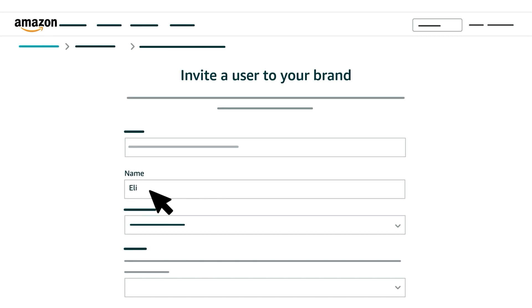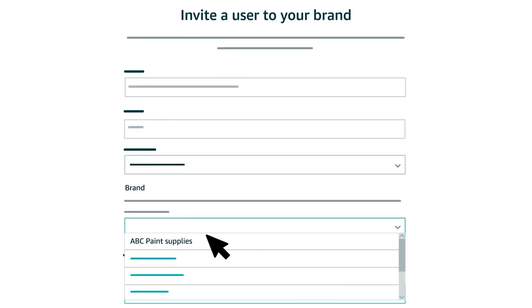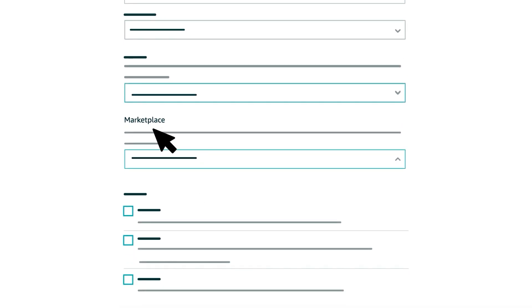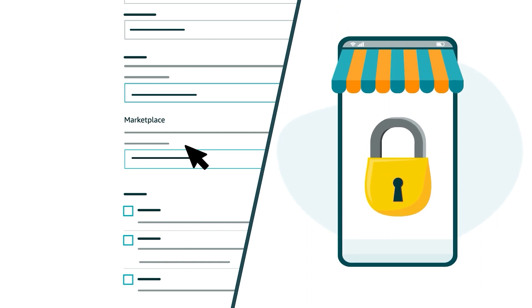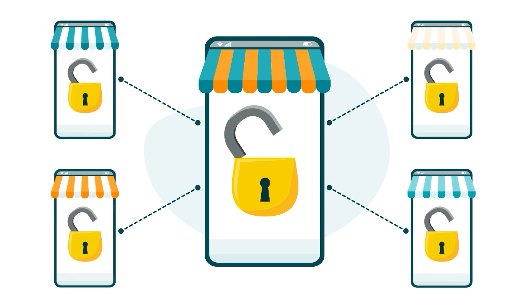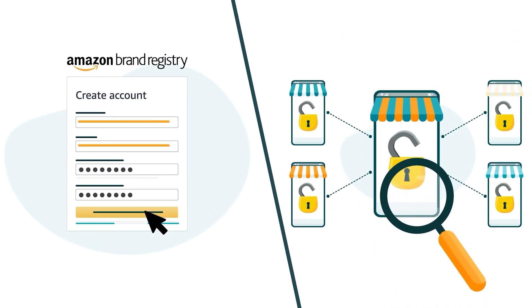Next, enter the name of the user you're inviting to your brand and select their preferred language, the specific brand you want to affiliate their account with, and the marketplace they'll use to sign in. Note that selecting a marketplace for sign in doesn't limit the user's access to that marketplace. They'll have access for the brand in each country-based store where it's registered. The sign in marketplace simply identifies which store they use to access their Brand Registry account.